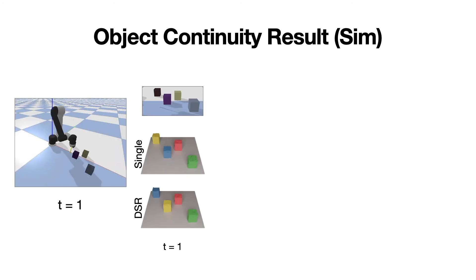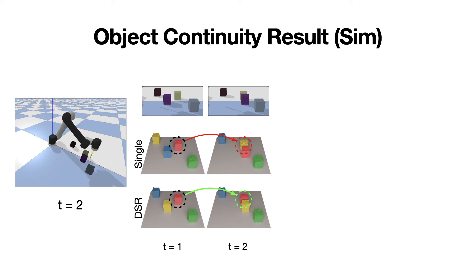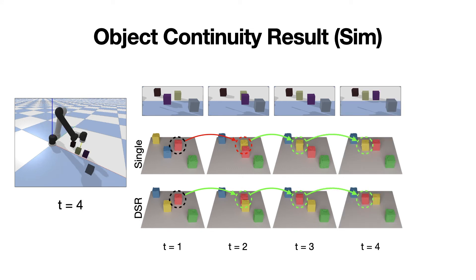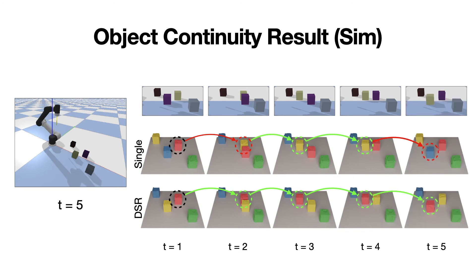In the simulation demonstration, positions of four visually indistinguishable objects are swapped after several interactions. The depth observations of the first and the last step are almost the same, but our DSR net can still track the identities of these objects. It proves that the continuity owes to history aggregation instead of visual appearance.